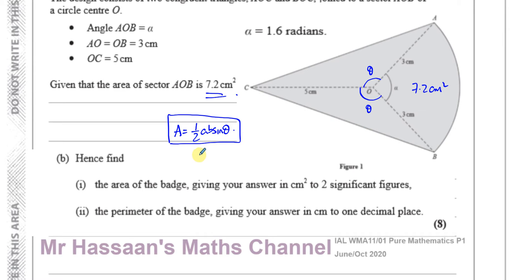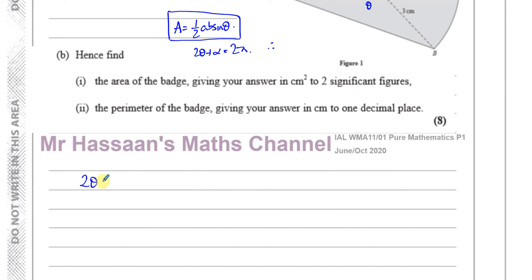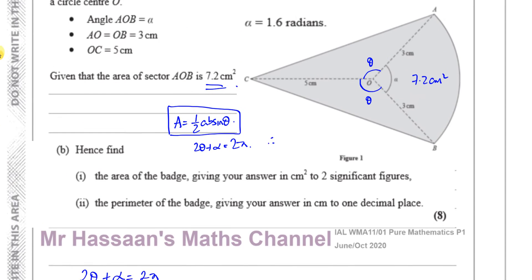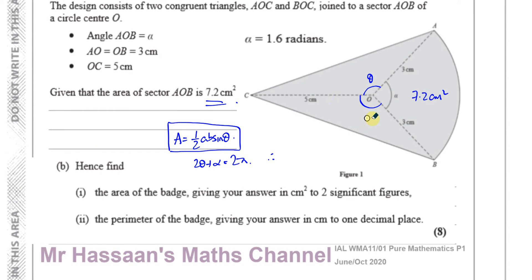We can say two theta plus alpha equals 360, or in radians, two pi radians, since one whole revolution is two pi. We know alpha is 1.6, so two theta plus 1.6 equals two pi. Therefore theta equals two pi minus 1.6 divided by two, which is pi minus 0.8. I'll leave it in this exact form — pi minus 0.8.